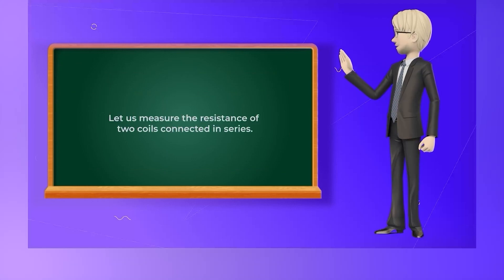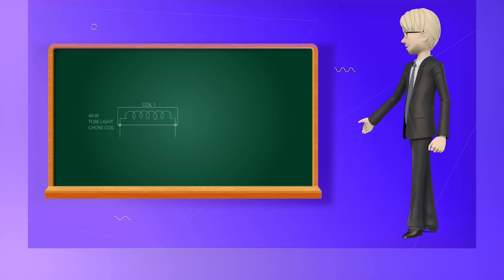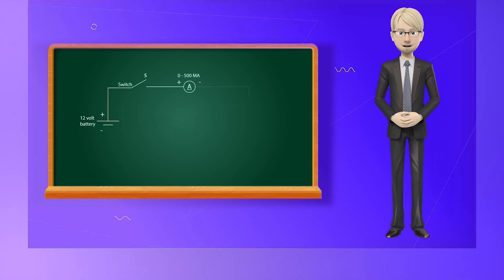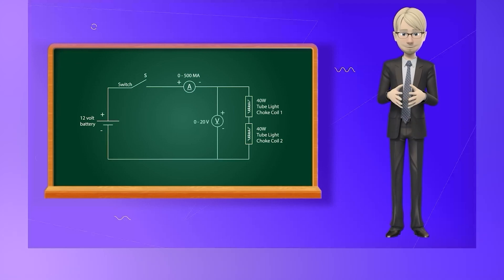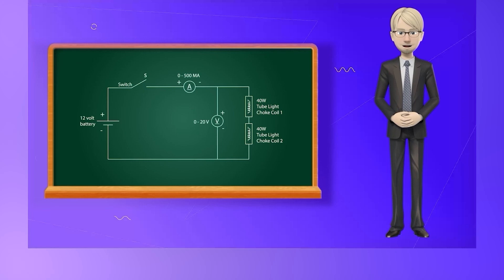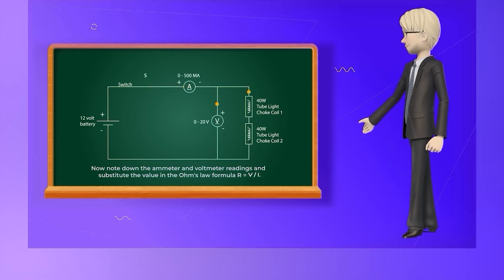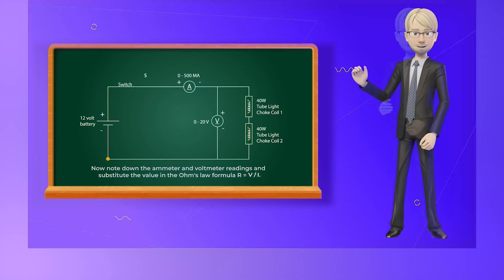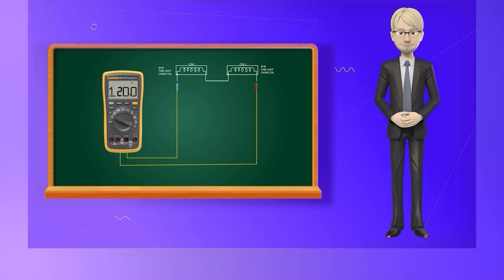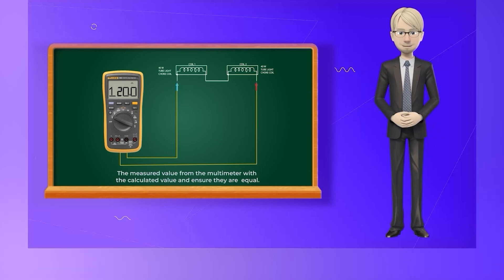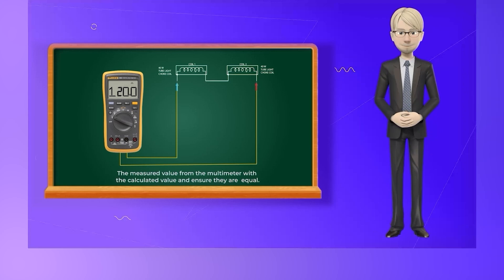Let us measure the resistance of two coils connected in series. Take two choke coils, each with 40W, and connect them in series. Connect the 12V battery, a switch, an ammeter, and the two choke coils all in series. Connect a voltmeter in parallel to the circuit after the switch S. Close the switch S. Note down the ammeter and voltmeter readings and substitute the values in Ohm's law: R = V / I. Then measure the total resistance of the series-connected choke coils directly using a multimeter. Compare the measured value with the calculated value and ensure they are approximately equal.